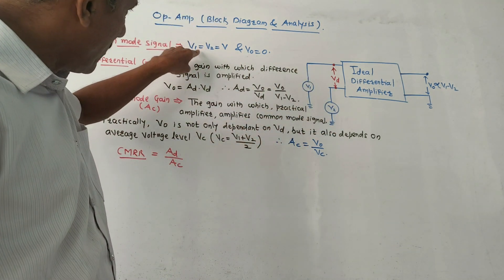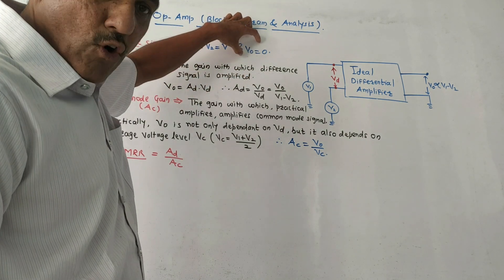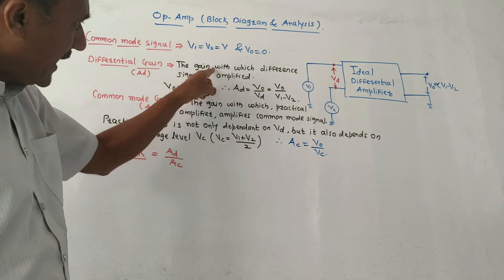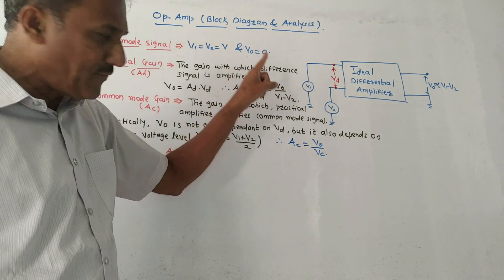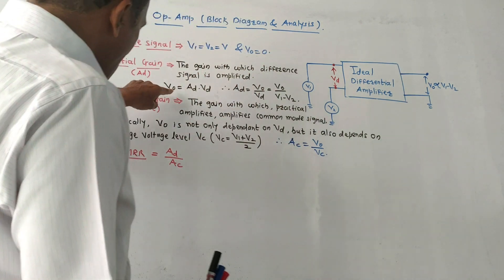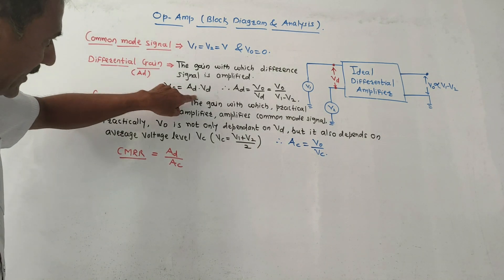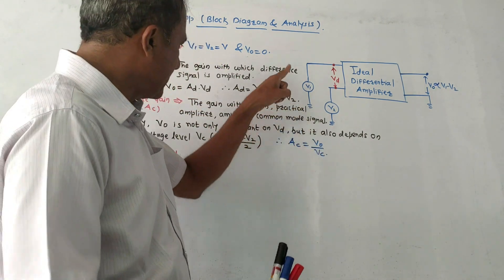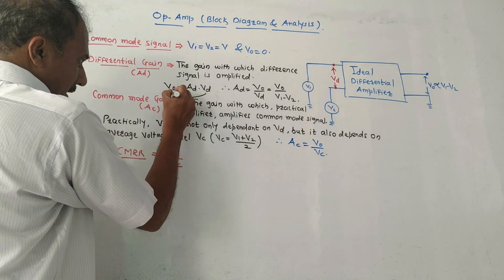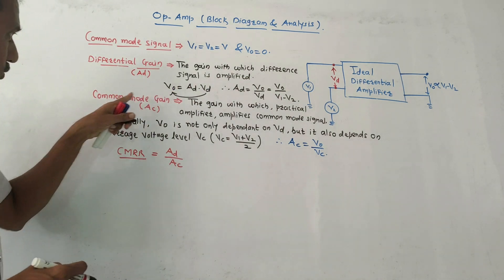The first parameter is common mode signal. If you apply a common signal — that means if V1 equals V2 — then the output will be zero. This is the case for an ideal op-amp or ideal differential amplifier. The next parameter is differential gain Ad. The gain with which the differential signal is amplified is called differential gain. V0 equals Ad into Vd, where Vd is V1 minus V2. So Ad equals V0 upon Vd, which is V0 upon (V1 minus V2).